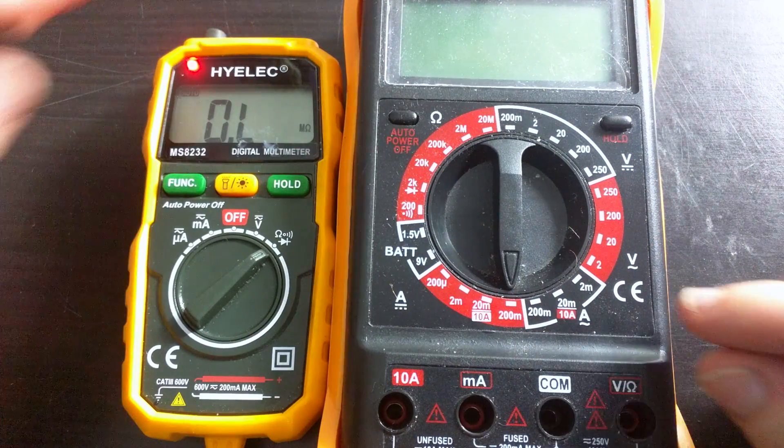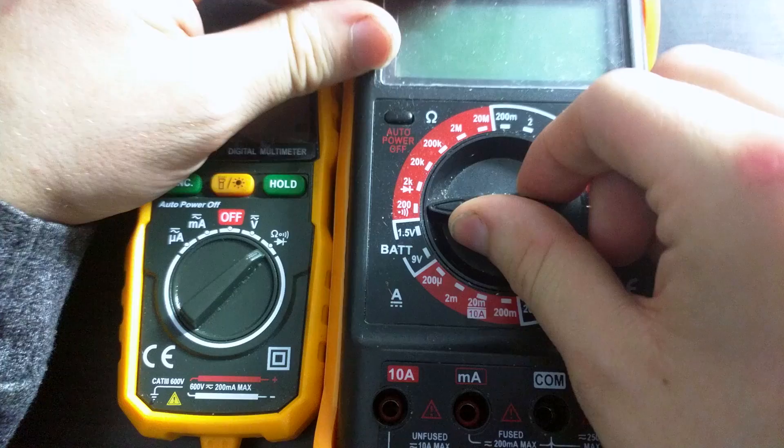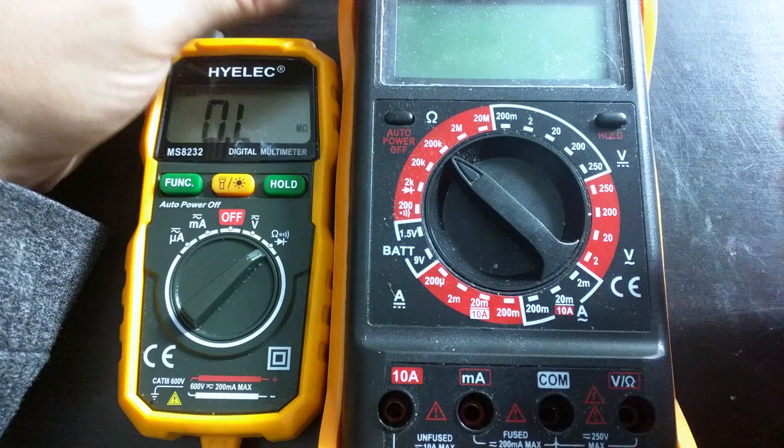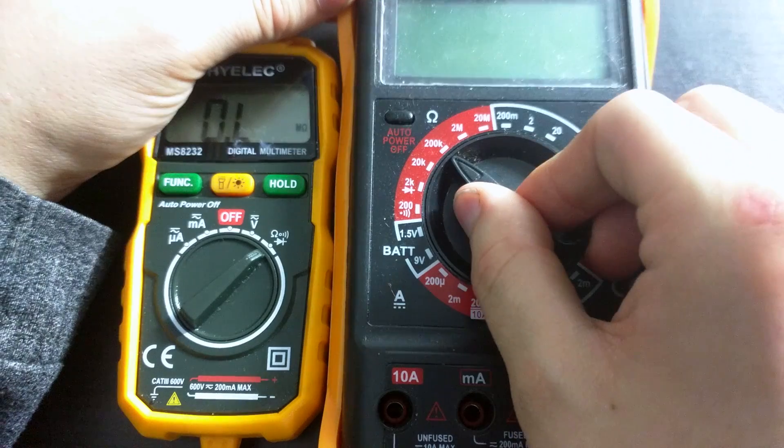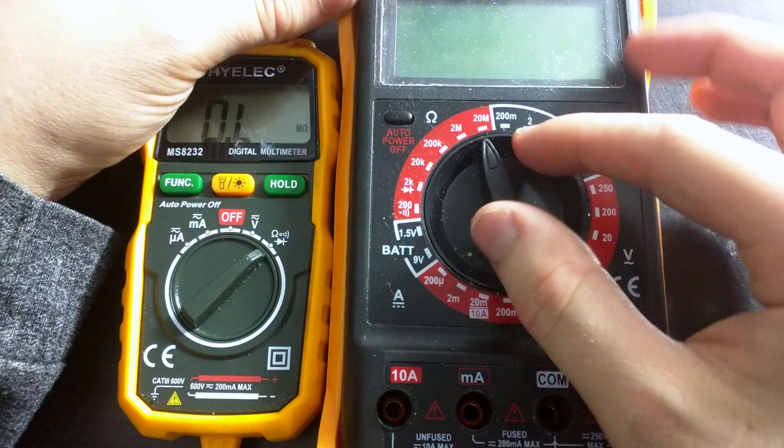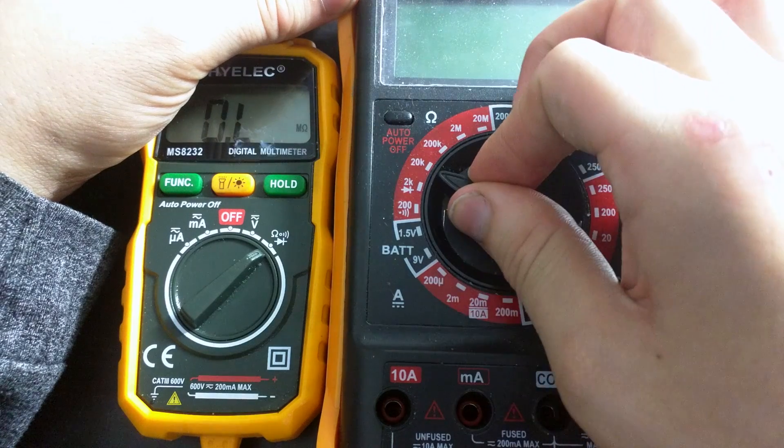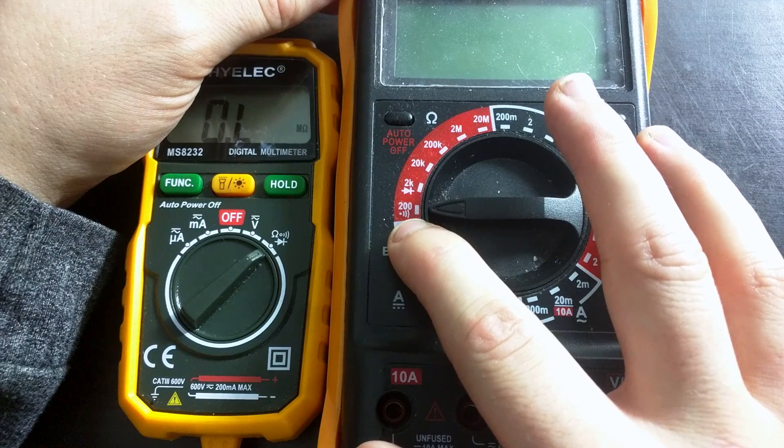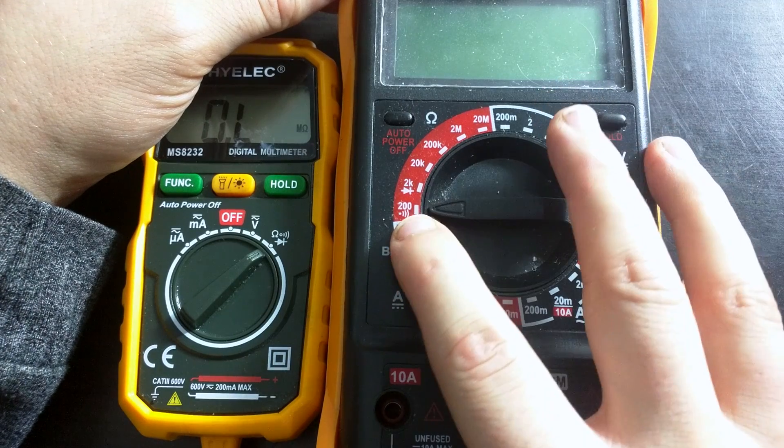I have another multimeter which is very similar, but instead allows me to select a range of resistances. If I know I want to measure resistances above 20 mega ohms, I would turn the dial to this. Or if I'm looking for lower resistances, for example under 2 kilo ohms, or even under 200 ohms, or to measure continuity, I would select the lowest value.